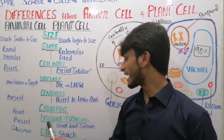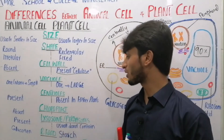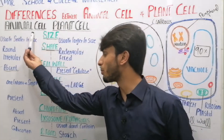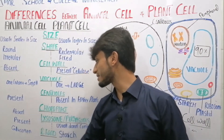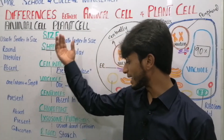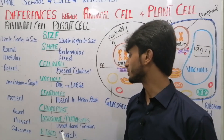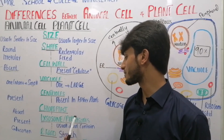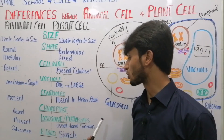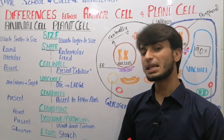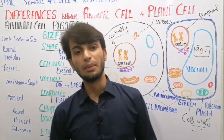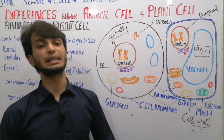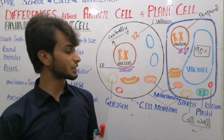The next difference is about lysosomes and peroxisomes. Lysosomes and peroxisomes are mostly present in animal cells, while in plant cells they are usually absent. This is also a most important MCQ for the MDCAT and exam — you should star-mark this point.